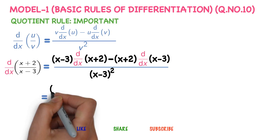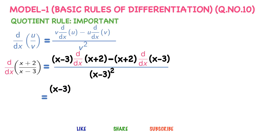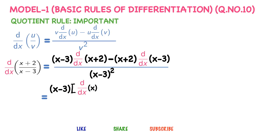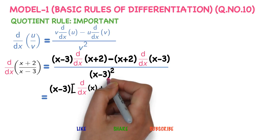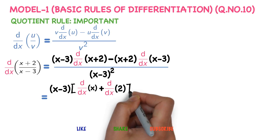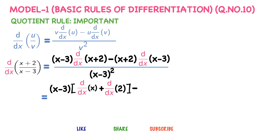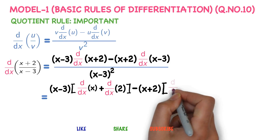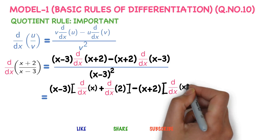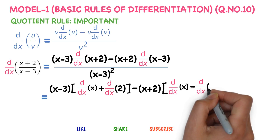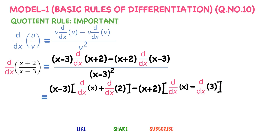So we have (x minus 3) into the derivative of (x plus 2), minus (x plus 2) into the derivative of (x minus 3), all divided by (x minus 3) whole squared.